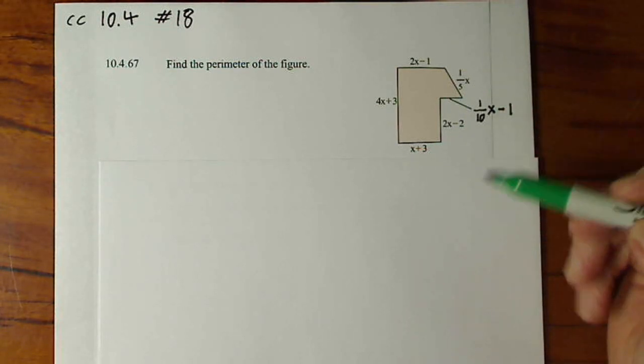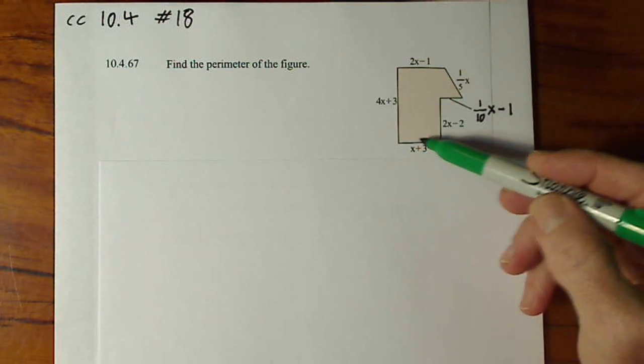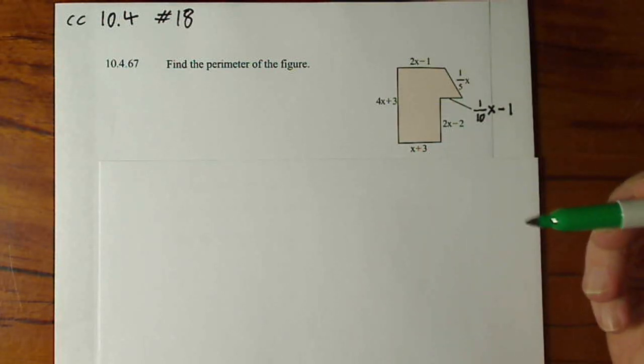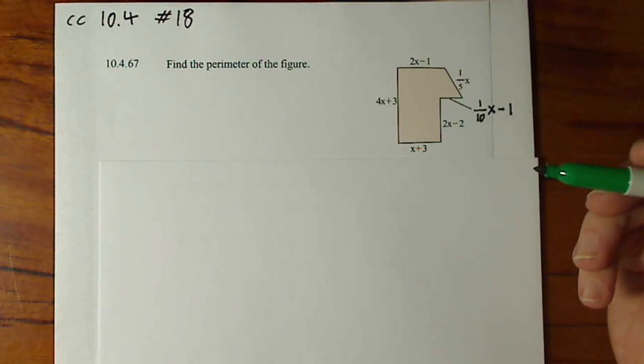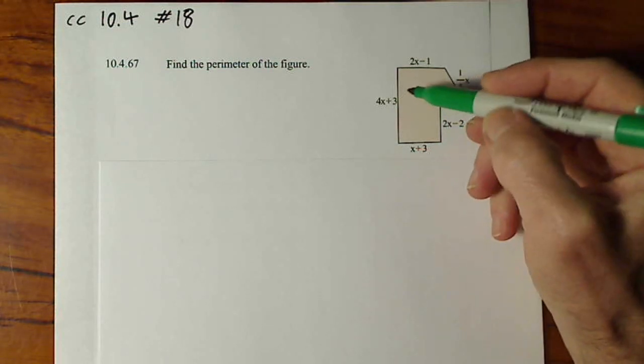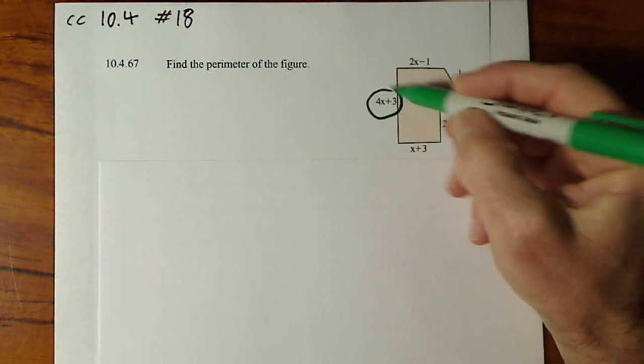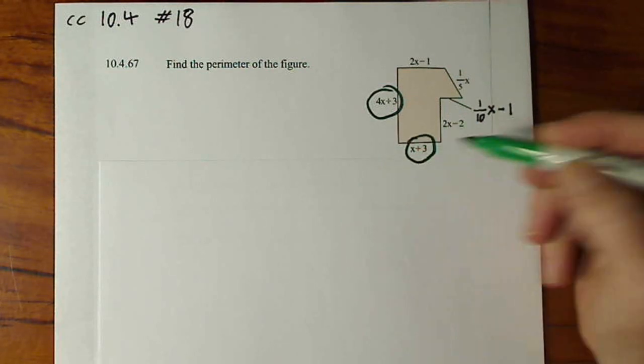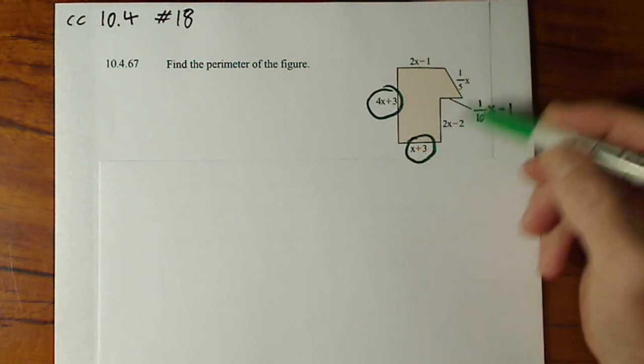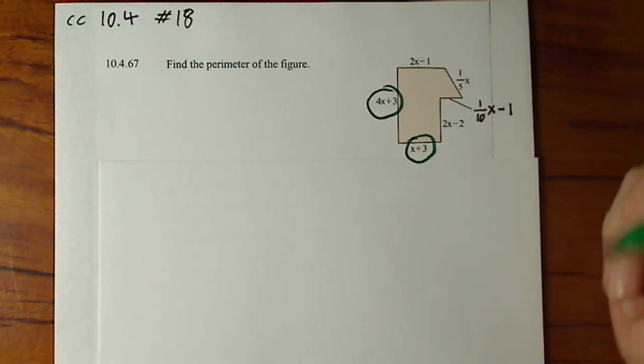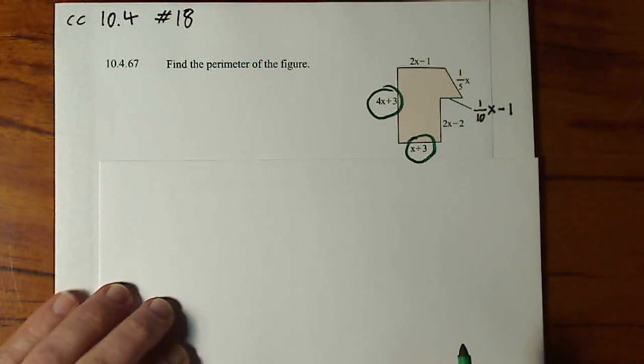To add these, to combine these different terms, there's many ways to approach it, but I think the best approach is going to be to grab these two binomials that are positive and positive, positive and positive. It'll be easiest to combine them.